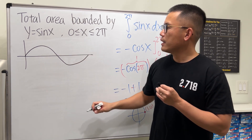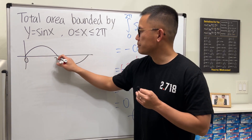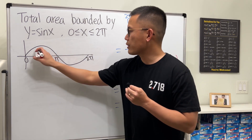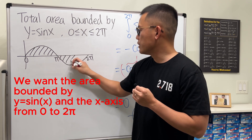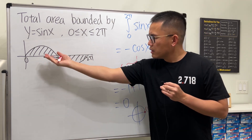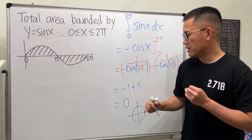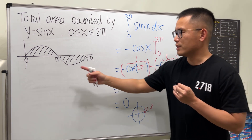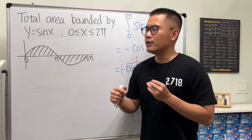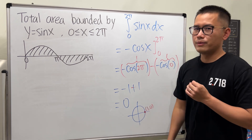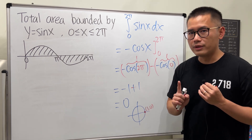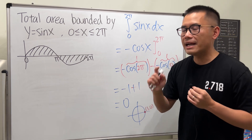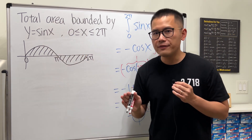Sine x starts at zero, goes up, then down, then back up. This is zero, this is pi, and here is two pi. We're talking about this region and this region together. Can this picture give us an area of zero? No — because we can actually see that there are two regions.